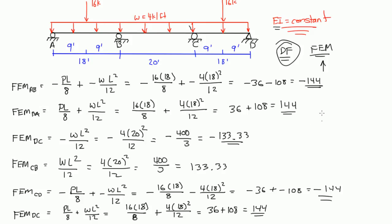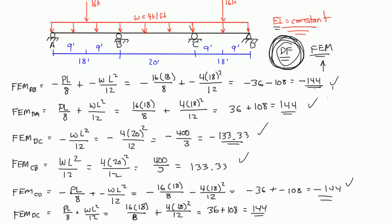Notice that the fixed end moments for AB and BA are negative 144 and positive 144, and it's the same negative 144 and positive 144 for span CD. This makes sense because the beam is pretty symmetrical — the distributed load is symmetrical, and the point loads are symmetrical. In the next video, we're actually going to do the distribution factors, which are a little bit different. See you then.